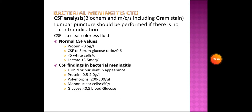CSF findings in bacterial meningitis: appearance will be turbid or purulent; protein raised at 0.5 to 2 g/L; polymorphs 200 to 300 per microliter; mononuclear cells less than 50 per microliter; and glucose less than 0.5 of blood glucose.